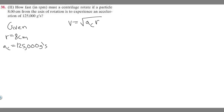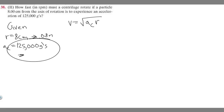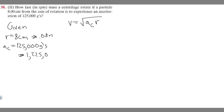This right here is your formula, and this is what we're going to use to solve. Notice we have A sub C and R, but they're not in the correct units — we have to convert them both to meters. To convert centimeters to meters, we know there are 100 centimeters per meter, so divide by 100: 8 divided by 100 is 0.08 meters. Then we convert Gs to meters per second squared by multiplying by 9.8: 125,000 times 9.8 gives 1,225,000 meters per second squared.